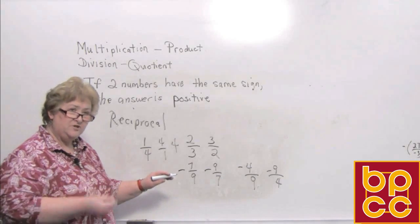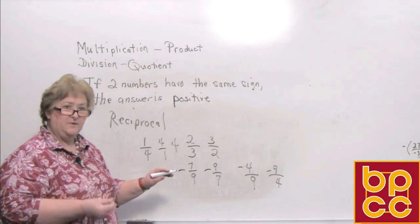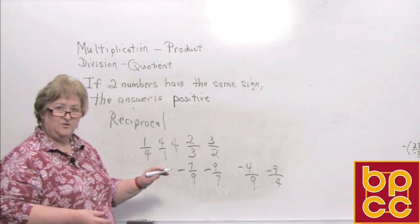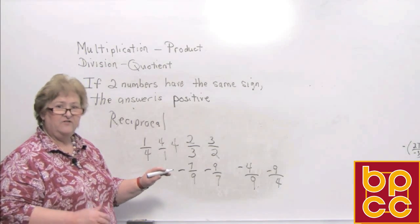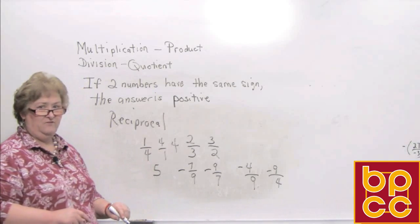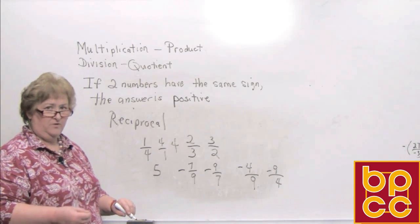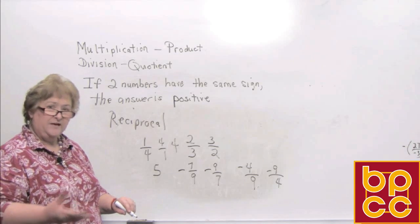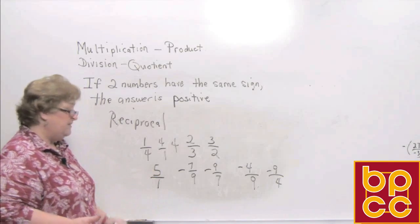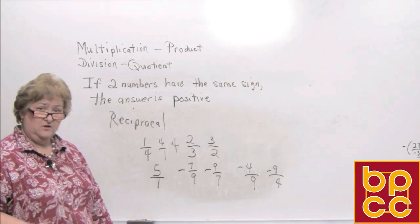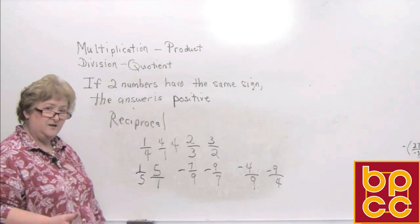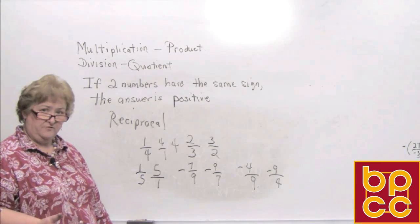When you do a reciprocal, if the sign is positive, keep it positive but flip it. If it's a negative fraction or negative number, it remains negative as you flip it. Let's try one more: if I give you the whole number 5, which is really 5 over 1, the reciprocal is going to be one-fifth — not a negative one-fifth, just one-fifth.